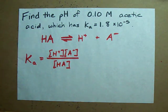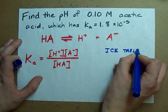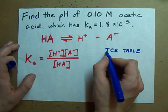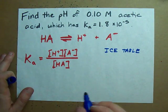What we really need, though, are the concentrations of each of these at equilibrium. How do you do that? The way that you do that is with something called an ICE table.